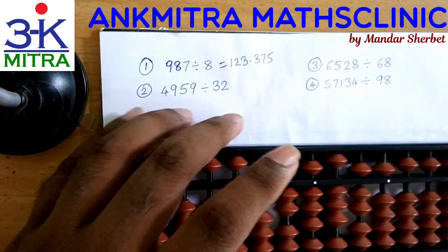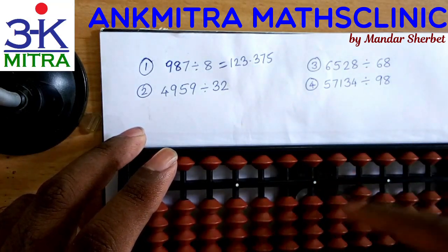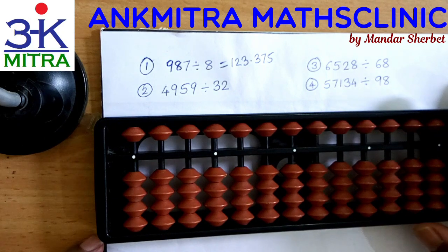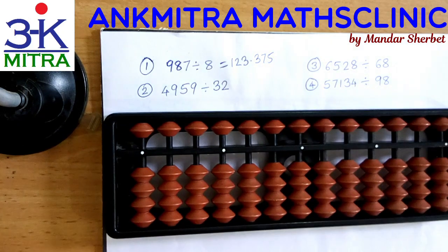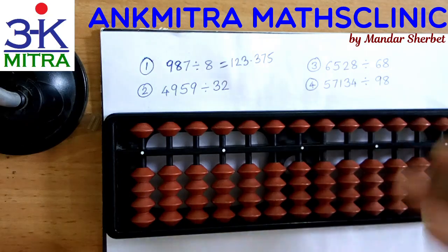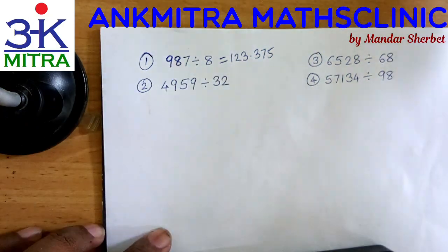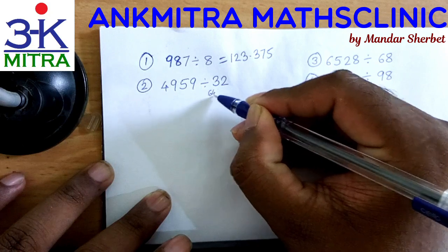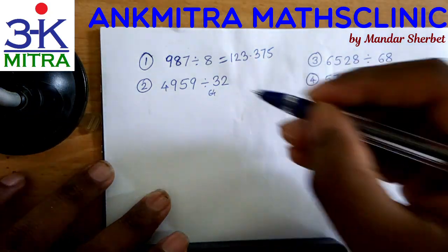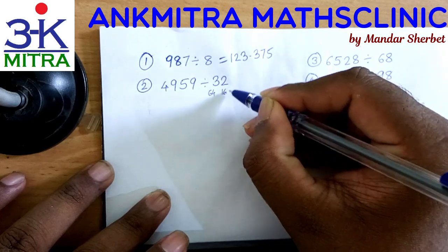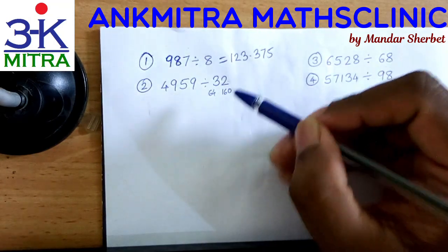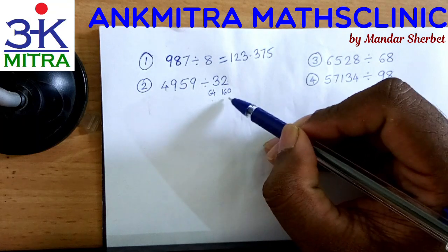Now let's look at the second example. In this case the divisor is a two-digit number, so many students, parents, and teachers might not be very well accustomed to the table of 32. What we need to do in such situations is to be ready with 2 times 32 and 5 times 32 to simplify the procedure. 2 times 32 is 64, and 5 times 32 is 160. I'll write these down just below 32.